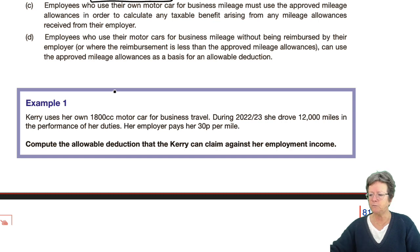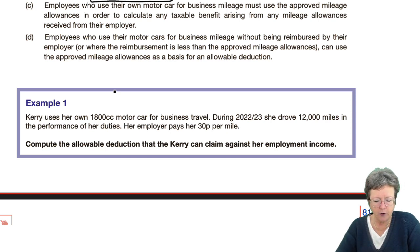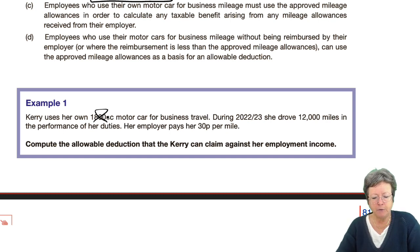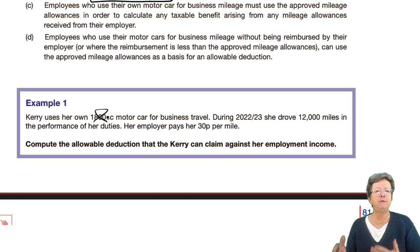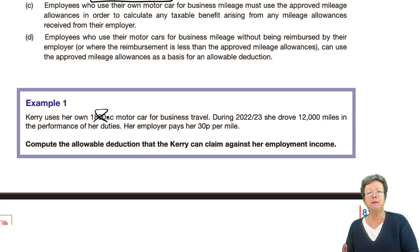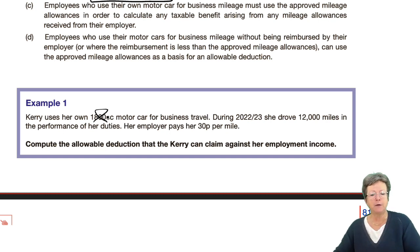Example number one: Kerry uses her car. She drove 12,000 miles for the performance of her duties and they paid her 30 pence per mile. We are to compute the allowable deduction she can claim. She hasn't been paid sufficient. If you haven't been paid sufficient according to these approved mileage schemes, you can make a claim each year for that to be deducted and get the money back from HMRC.